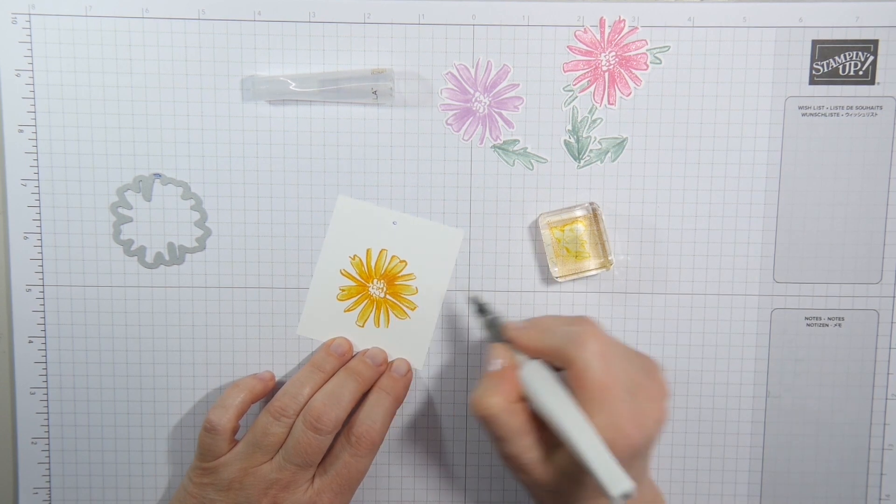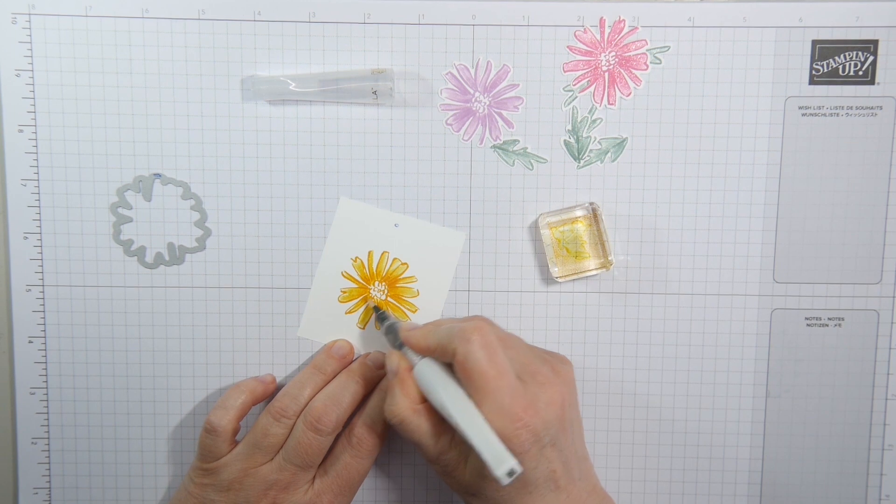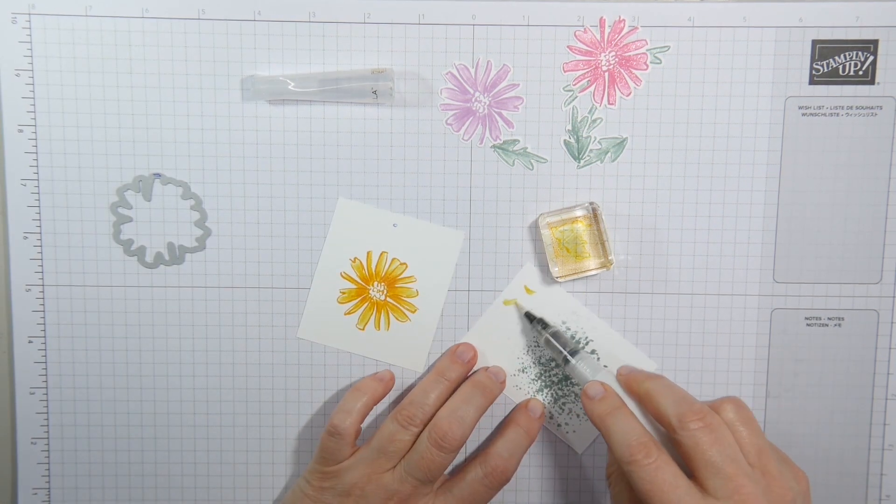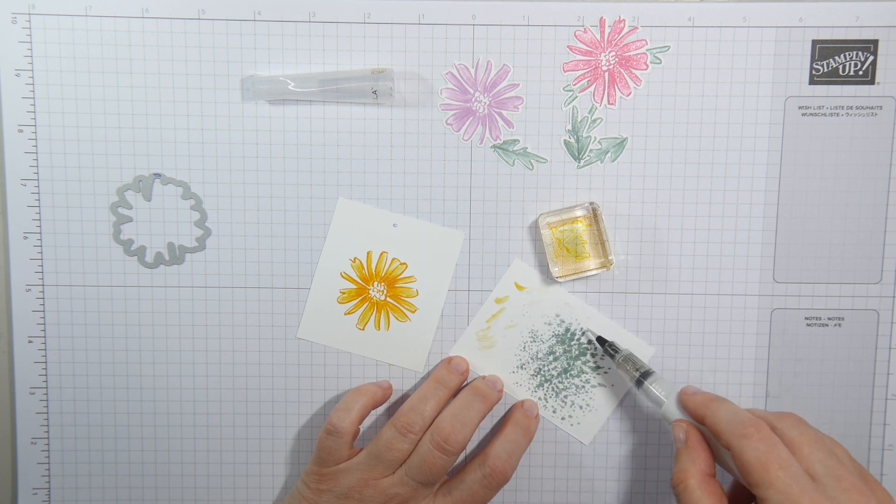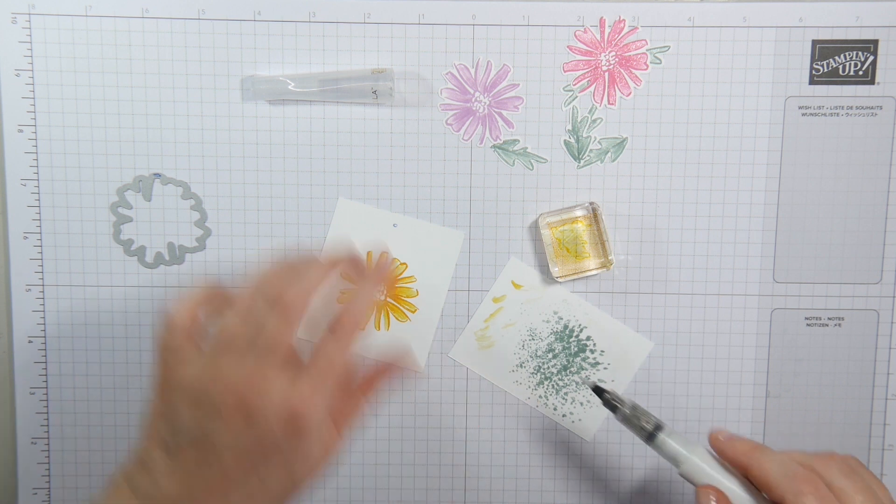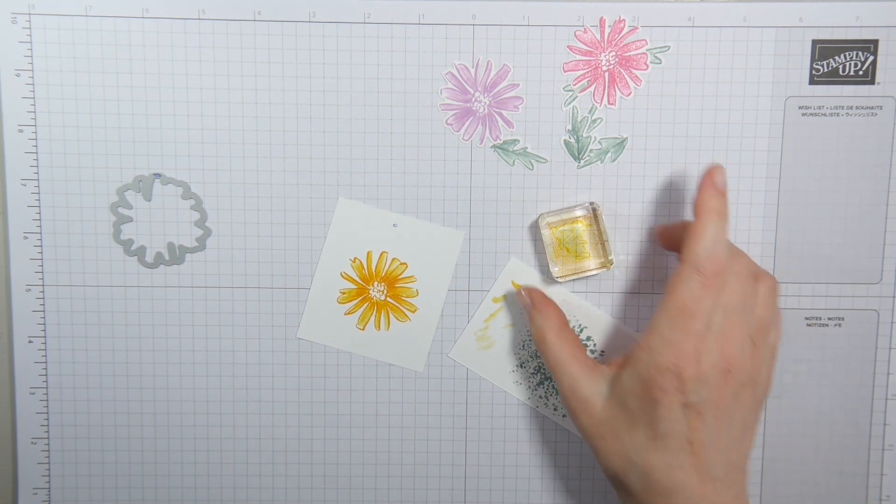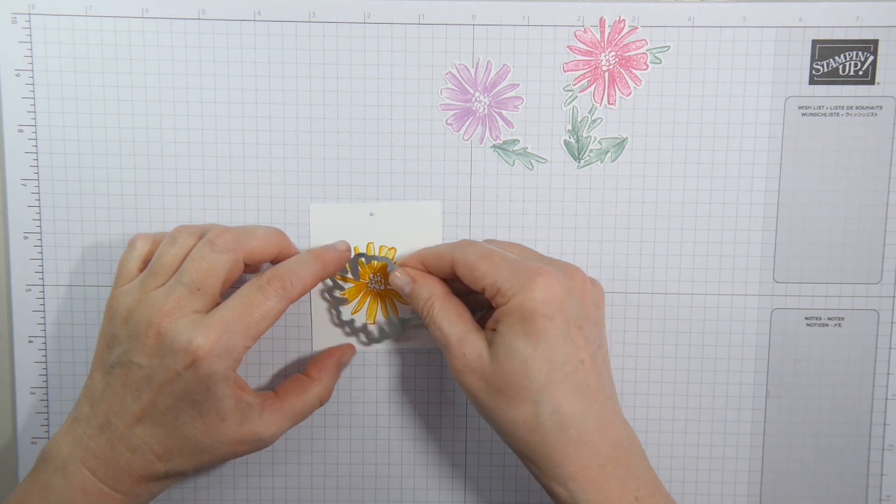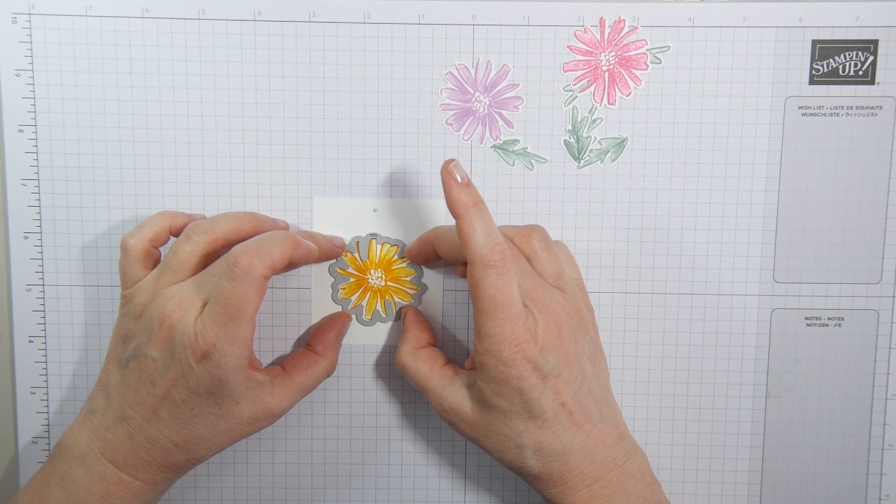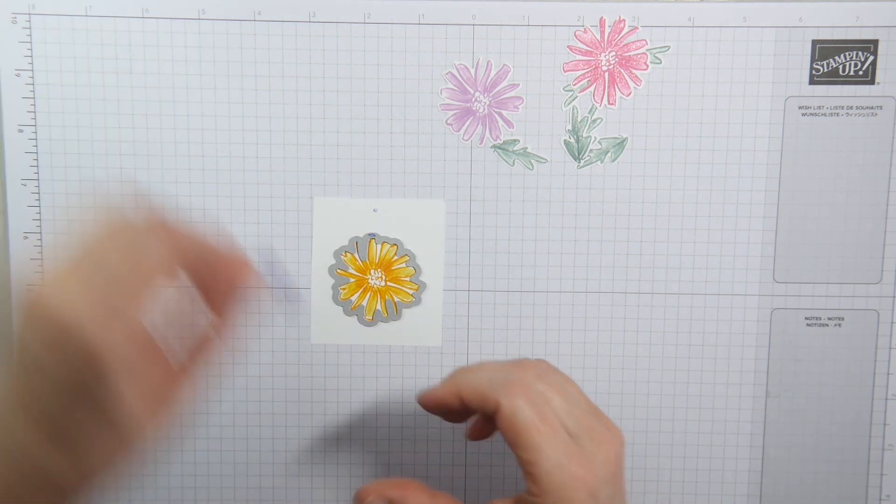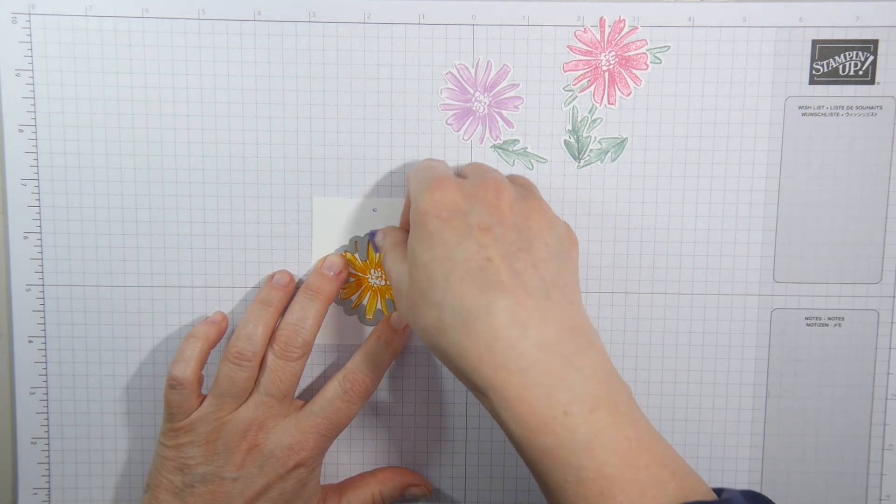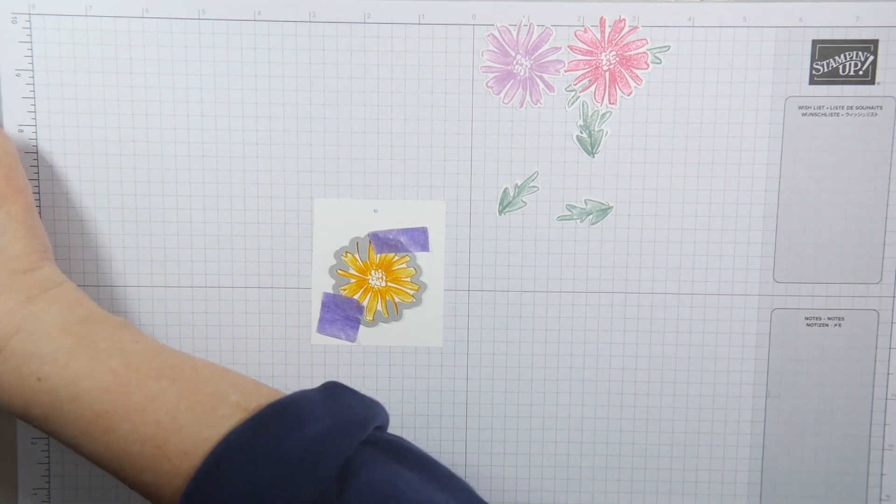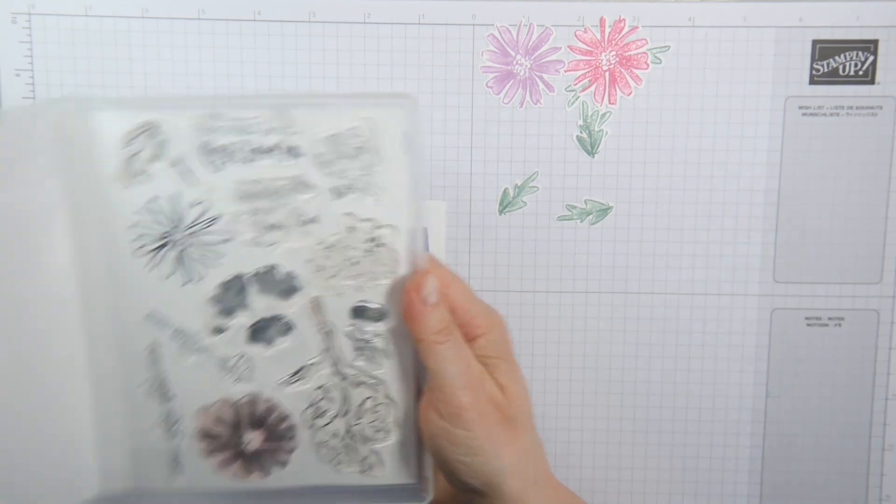And now I'm adding a bit more darkness towards the centre. And then all you have to do is clean off your Wink of Stella. And you can see if you gently move it along the paper. See, it cleans off very easily. And it's ready for another Wink of Stella ring. Now then, I'm going to put my die on top. And you see now it's very easy because of the dots that I've used to figure out where the die should go.